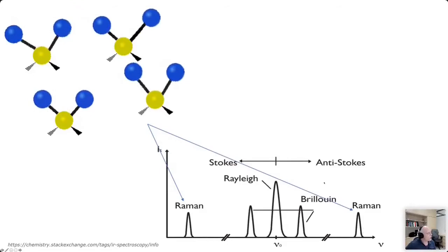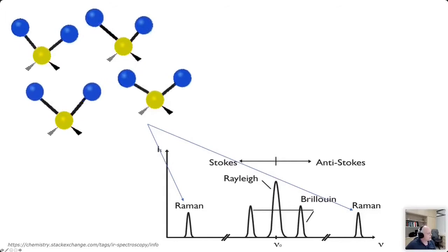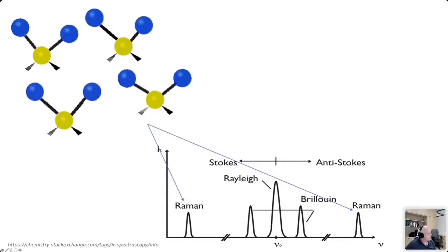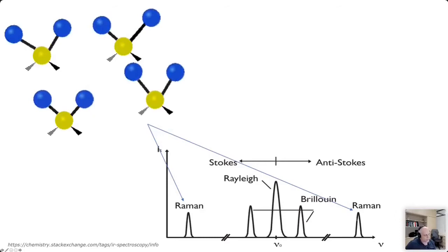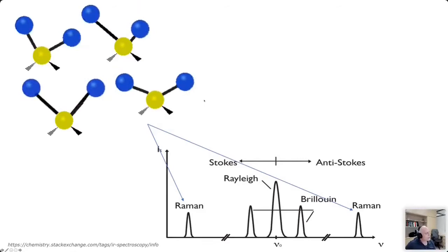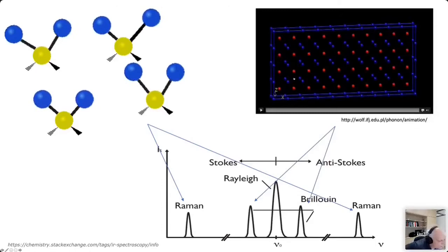What Raman does is reflect what kind of molecular bonds there are in the material. Some of these show what kind of vibrations are potentially possible within the molecule, and the presence of these Raman peaks — not a single peak but a succession of them — actually gives us information as to what kind of bonds are in the material. Brillouin is quite different.